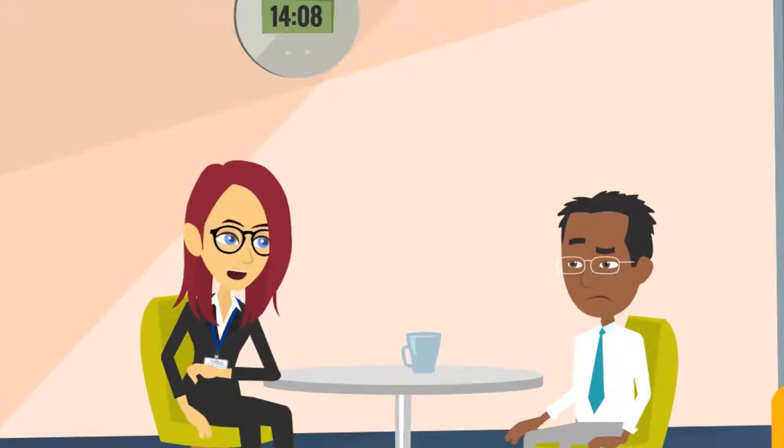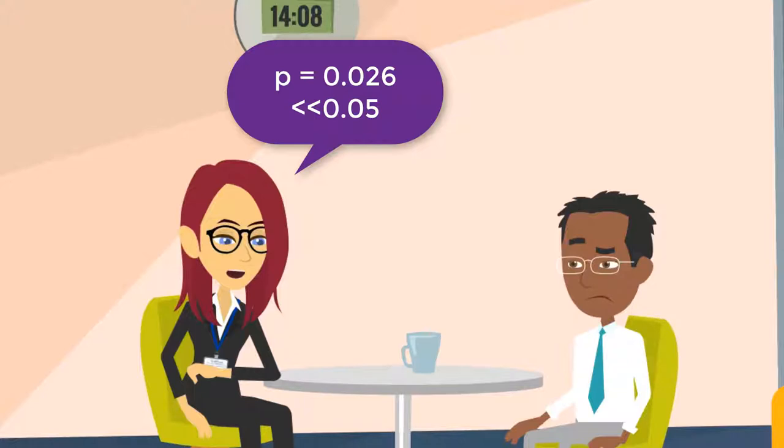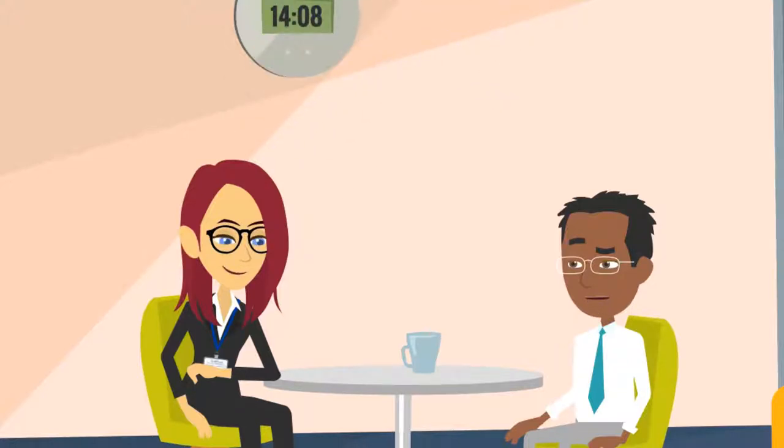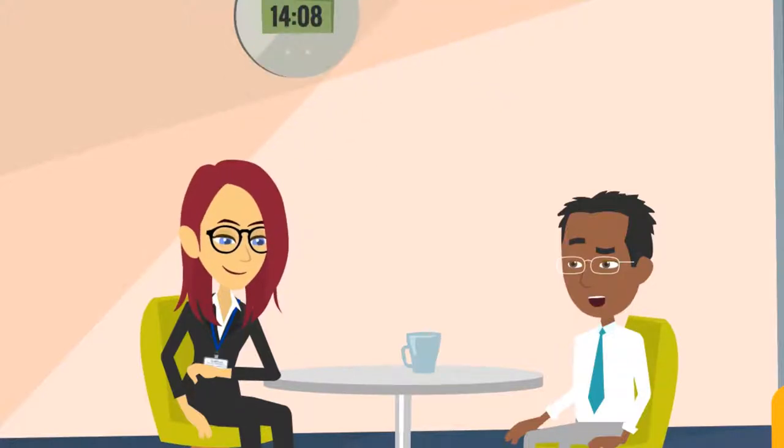I was able to double the sample size this morning just before you came in. How does it look? That is the bad news. With the additional information, the right tail p-value is 0.026, which is a lot smaller than 5%. Shucks. That is statistically significant.